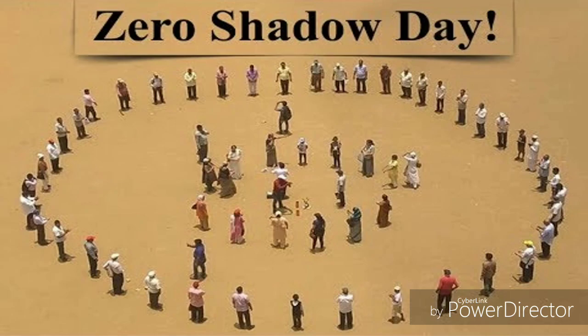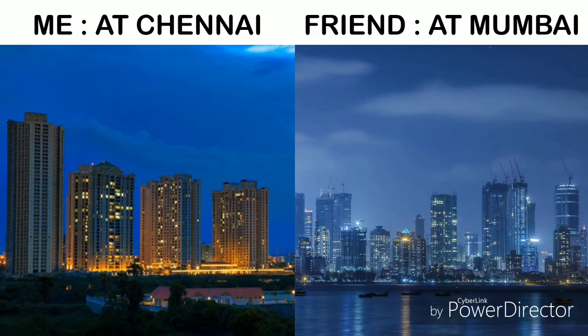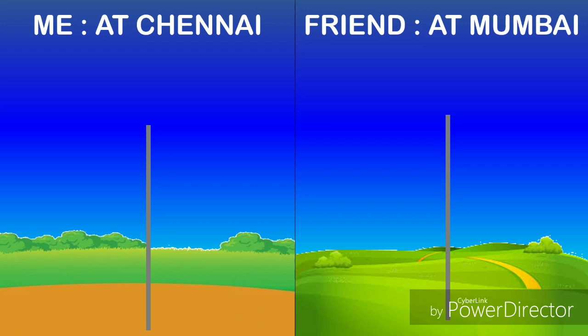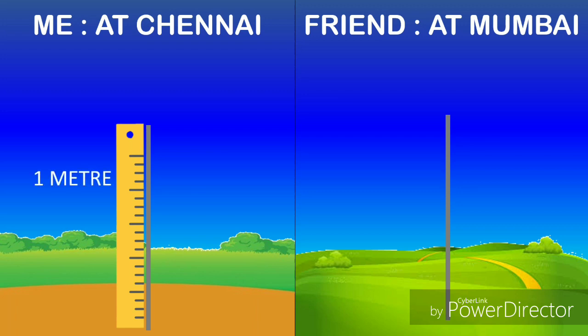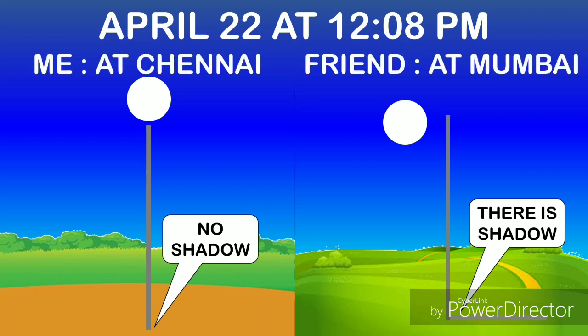Let's see how this concept of zero shadow day is related to finding the circumference of the Earth. I am here in Chennai, and the zero shadow day falls at 12:08 pm on April 22, 2020. On the previous day, my friend in Mumbai and I made some preparations. Both of us took a one-meter rod and placed it on a vertical surface, checking that the surface was flat using a bubble level reader. According to predictions, the shadow of the rod in Chennai could not be seen at 12:08 pm, but the shadow could be seen in Mumbai at the same time.